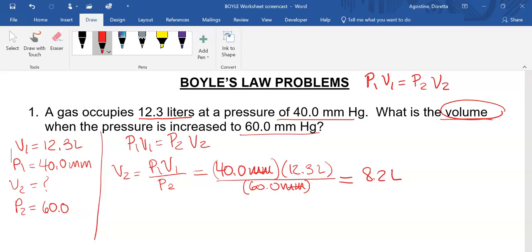But we have to look back at the problem, and looking over here, 3 sig figs, 3 sig figs, and 3 sig figs. So we have to add a sig fig here. So we're going to make that 8.20 liters, and that would be our new volume.